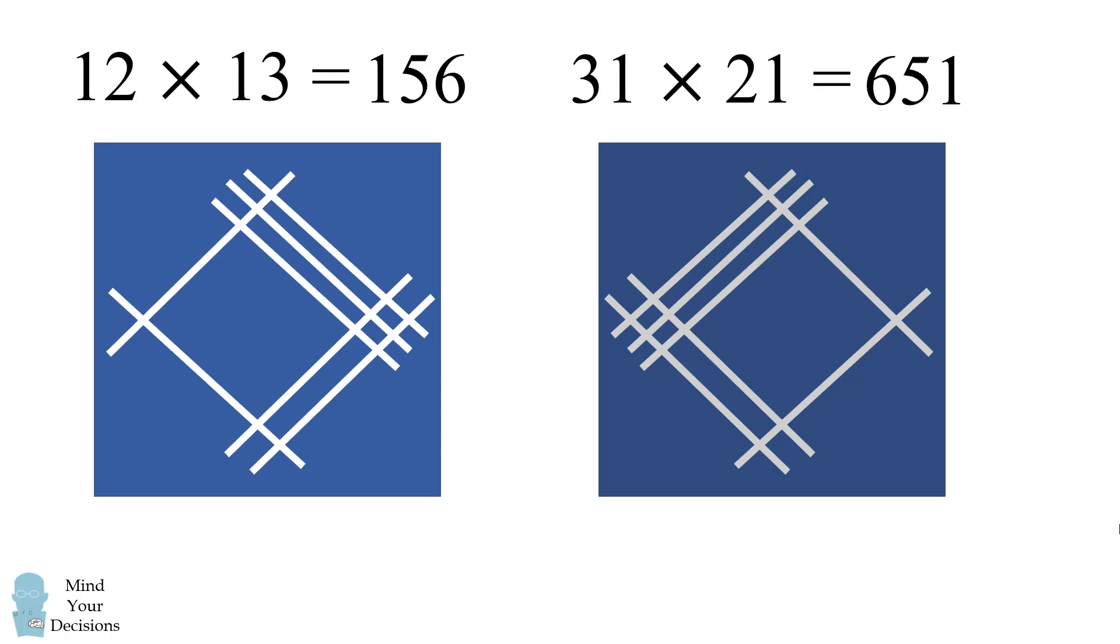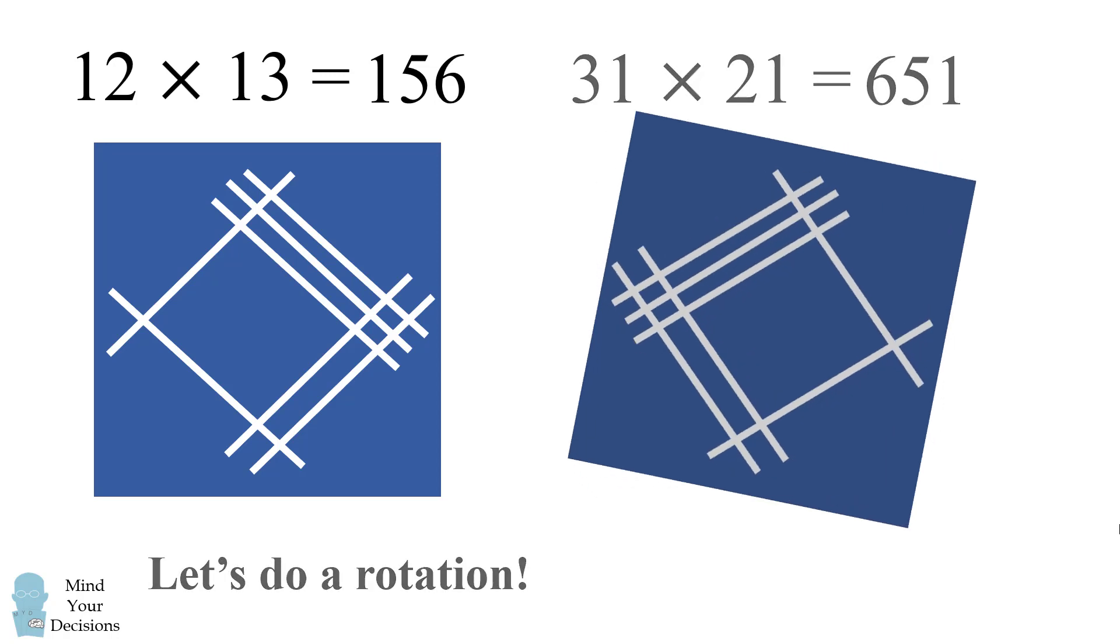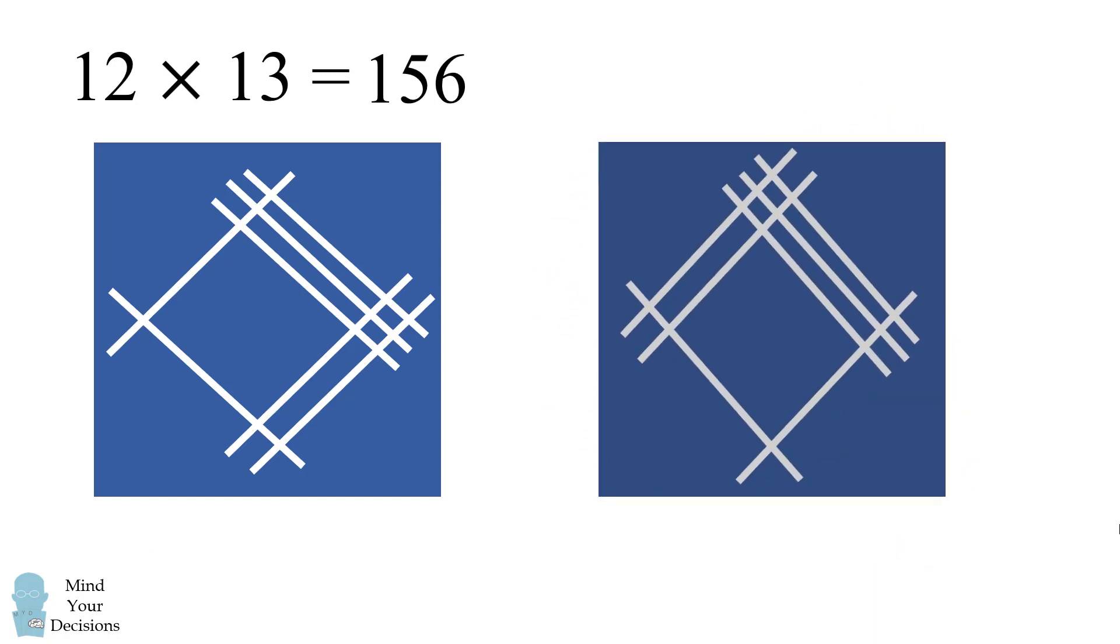Now we can continue finding the symmetries by doing a rotation. Here we have the problem of 21 times 13 and we can again solve this problem and we'll get 273.